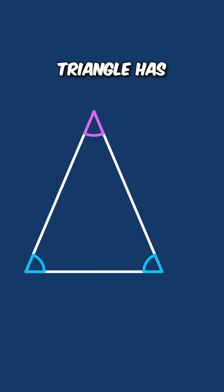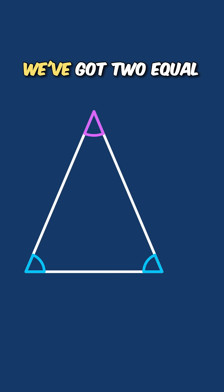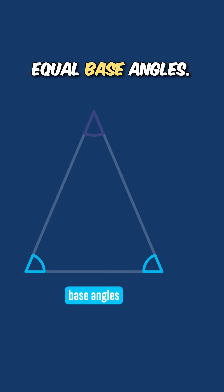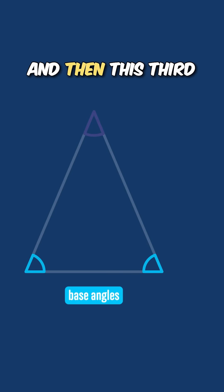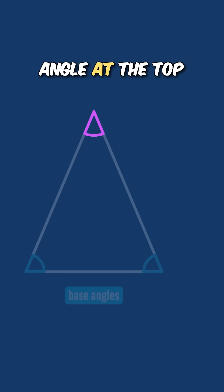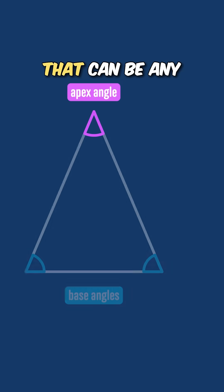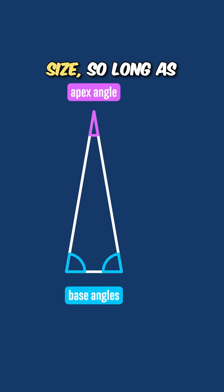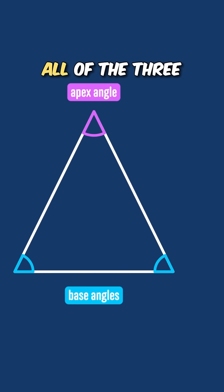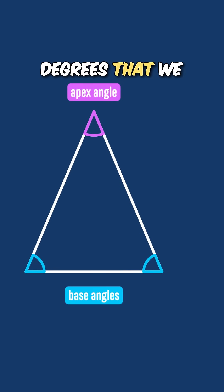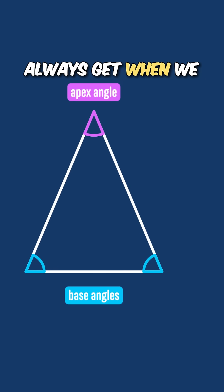Every isosceles triangle has this pattern: two equal sides and two equal base angles. The third angle at the top we often refer to as the apex angle. That can be any size, so long as all three angles still add up to the 180 degrees that we always get when we sum the angles in a triangle.